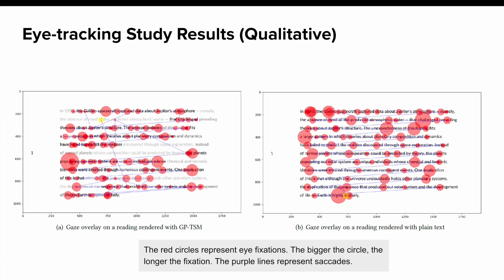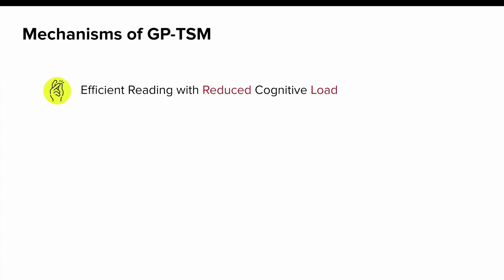Building upon these insights, we now discuss mechanisms of GPTSM. First, we notice that GPTSM on average allows you to read fewer words without sacrificing too much comprehension, as evidenced by participants skipping entire segments with lower opacity.